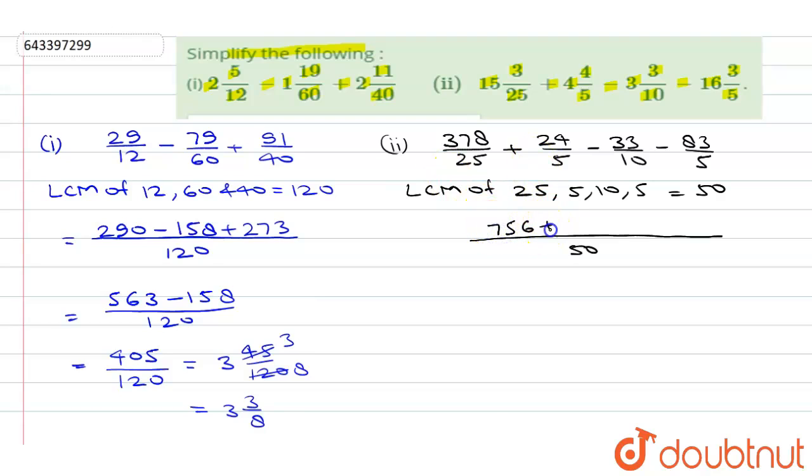50 by 25 we'll get 2. Now we'll multiply it with 2, 2 times 8 is 16, 2 times 7 is 14 plus 1, 15, 2 times 3, 6 plus 1, 7. Plus when we divide 50 with 5 we'll get 10, so it will become 240. When we divide 50 with 10 we'll get 5, so 33 times 5 is 165. Similarly when we divide 50 with 5 we will get here 10 and it will become 830.